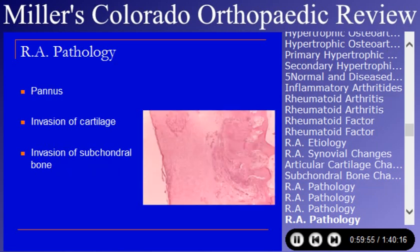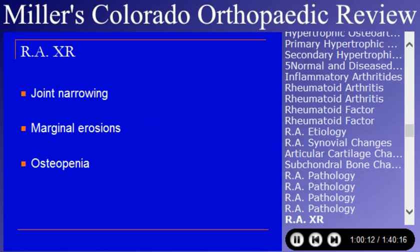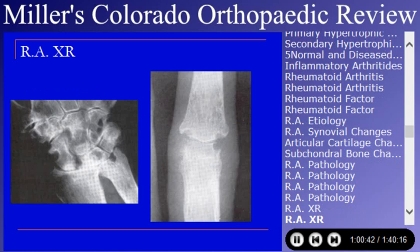As time goes by, pannus covers the joint and cartilage is destroyed. The subchondral bone gets invaded with granulation tissue leading to bone destruction. X-ray shows joint narrowing with marginal erosions — as opposed to the subchondral cysts of degenerative arthritis. Joint narrowing tends to be diffuse rather than focal. There is periarticular osteopenia as an X-ray characteristic.